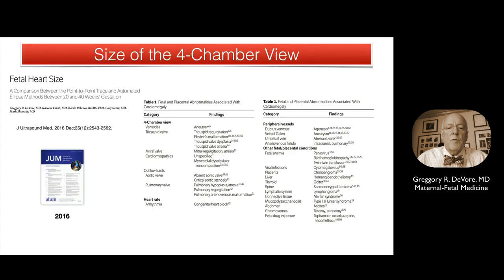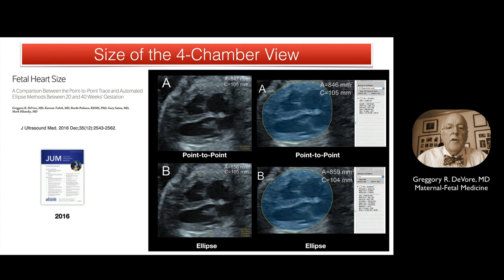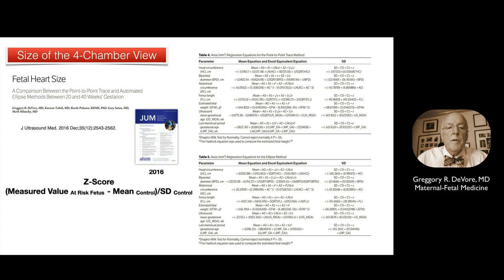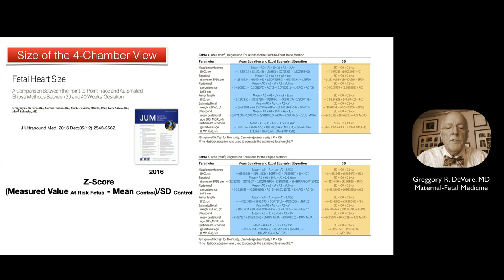After evaluating the shape of the four-chamber view, the next step is to examine its size. An increased size, known as cardiomegaly, has a long list of associated fetal problems, including structural malformations of the heart, arrhythmias, abnormalities of peripheral vessels, and other fetal diseases. To measure size, we selected the end-diastolic area and circumference using the point-to-point trace or ellipse tool on the ultrasound machine, or using offline software as part of a DICOM viewer. From these equations, a z-score and corresponding centile can be computed for individual fetuses using fractional polynomial regression with independent variables such as gestational age, BPD, head circumference, abdominal circumference, femur length, and estimated fetal weight.